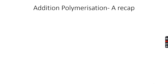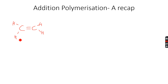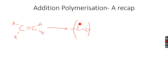Let's do a very quick recap of addition polymerization. We know that we have an alkene which is the monomer — a single unit. When several of these monomer units combine, we get a polymer, which is a large chain made up of several monomer units chemically bonded together. In this case the polymer is polyethene, because the monomer was ethene.